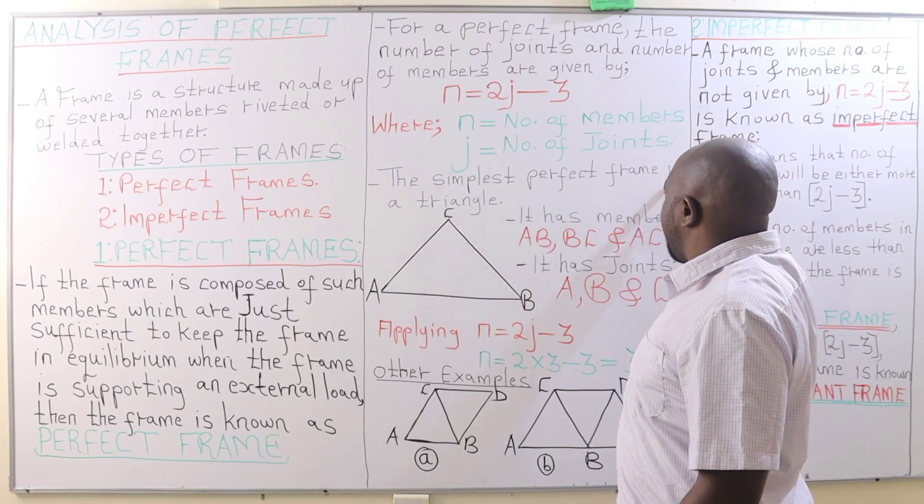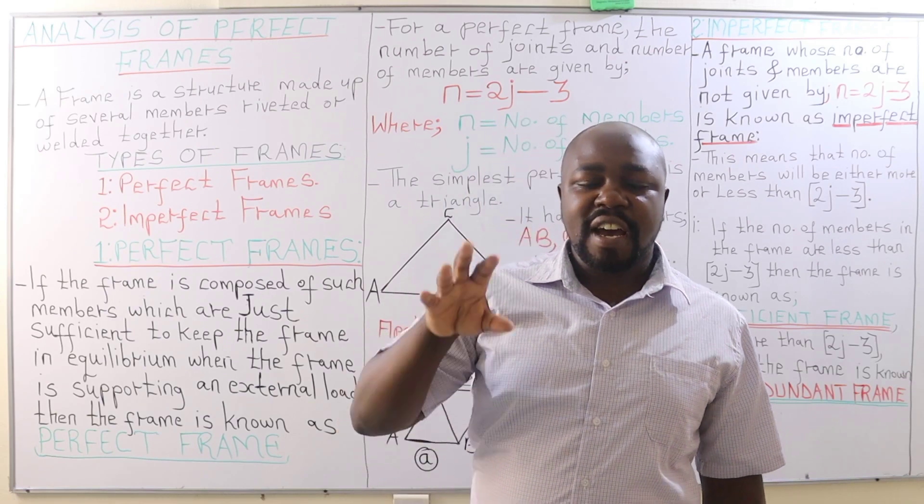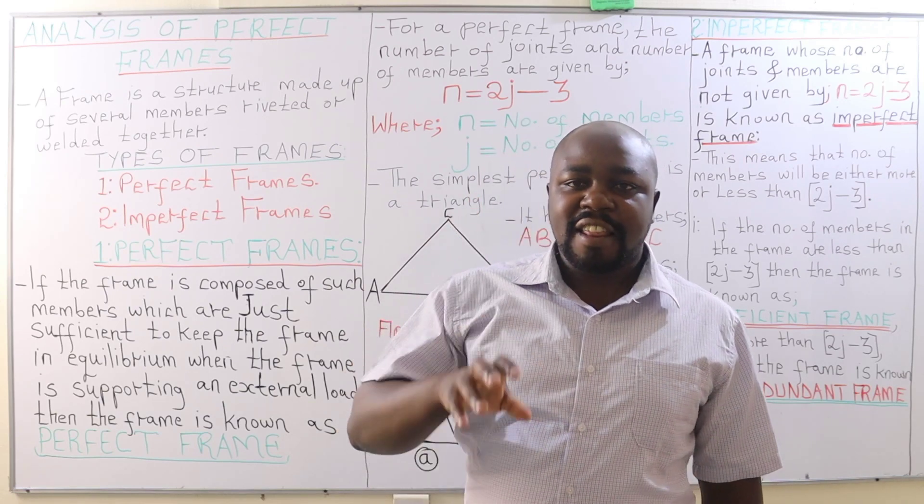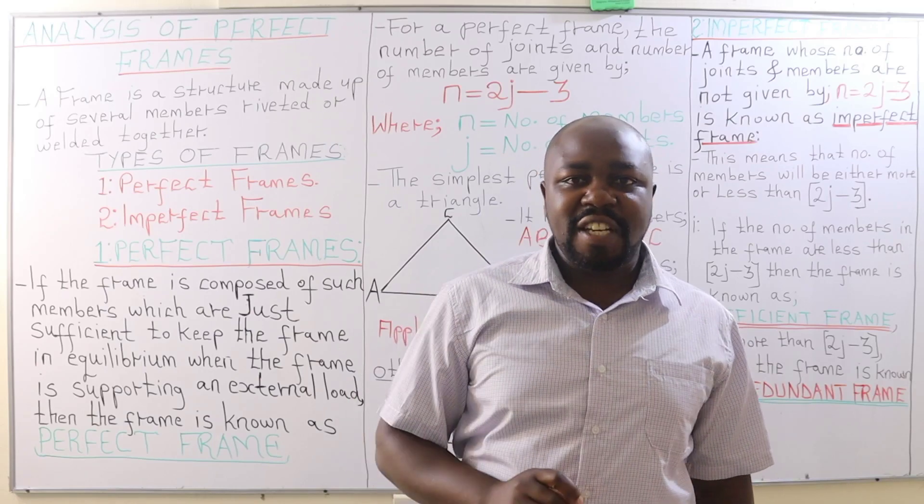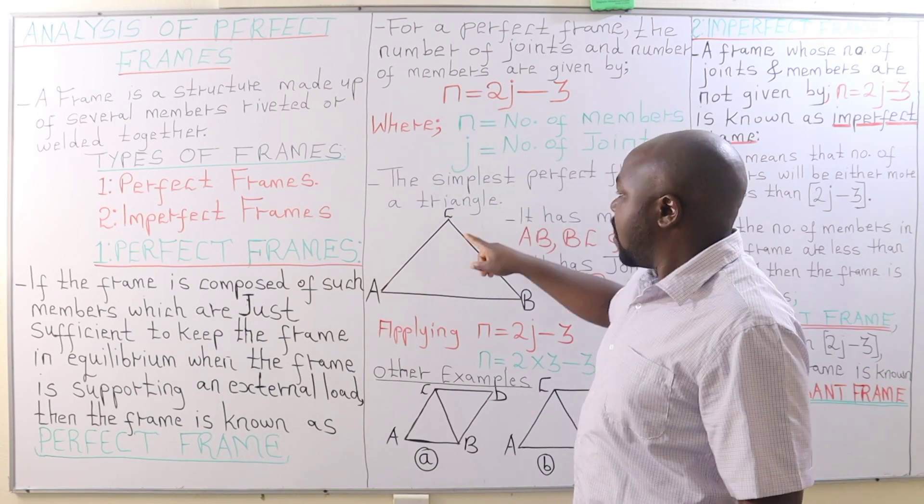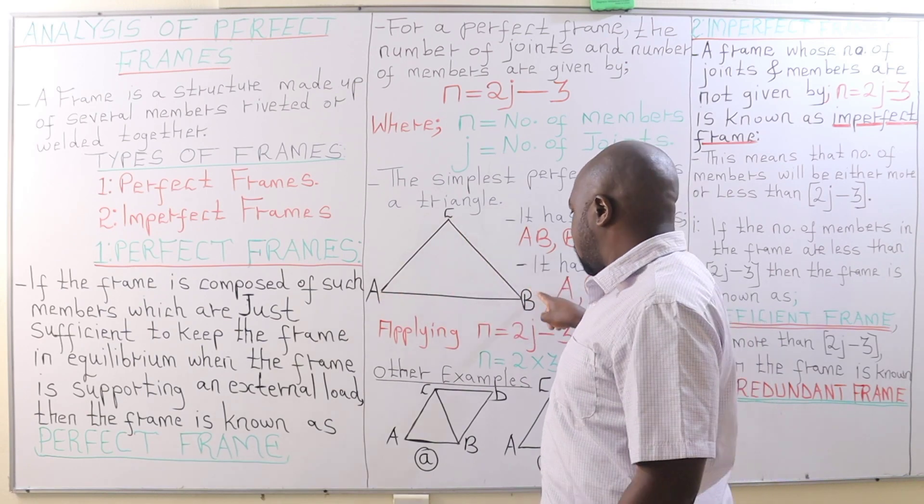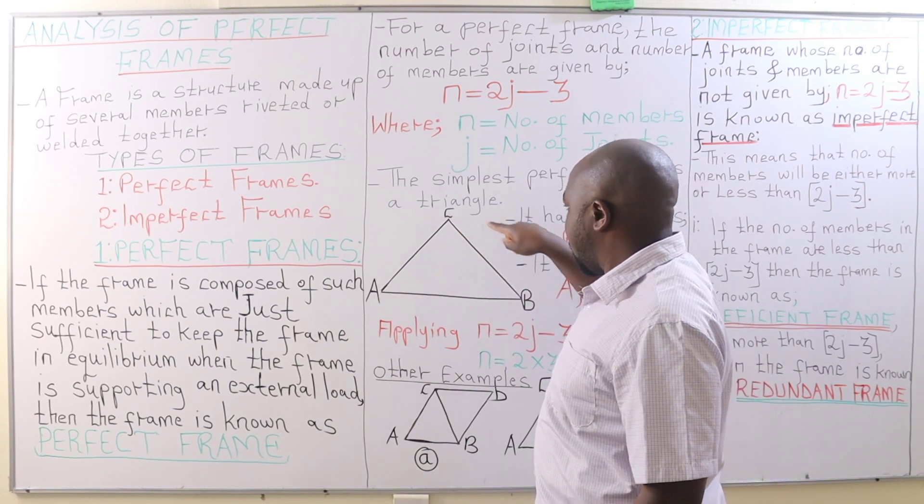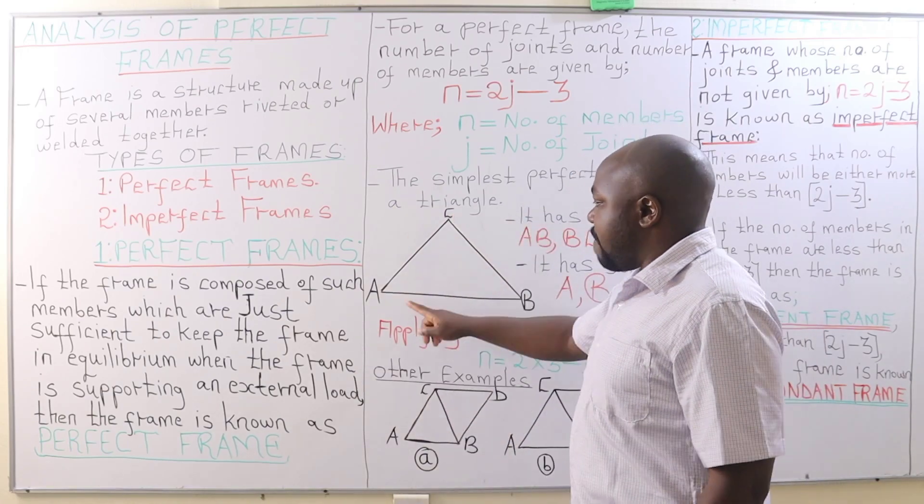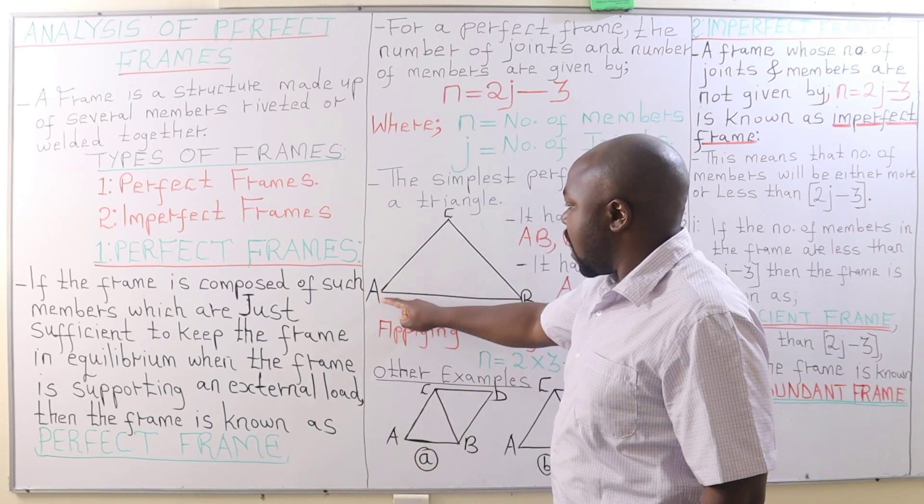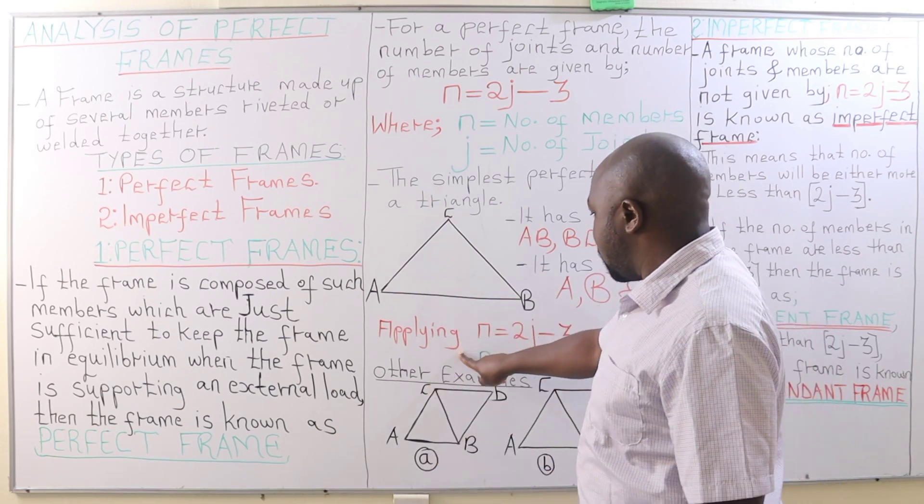The simplest perfect frame is a triangle. So if we have a triangular steel truss, that triangular truss will be perfect. Let's see whether it fulfills this relation. A triangle has three joints - we have joint A, B, and C - and it also has three members: member AB, member AC, and member BC.